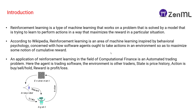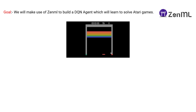You may be wondering what exactly the state is — the state is the observations for the particular problem. In this trading example, the state is the price history, so we can see the history and then perform actions. Now we know the basics of what exactly reinforcement learning is.